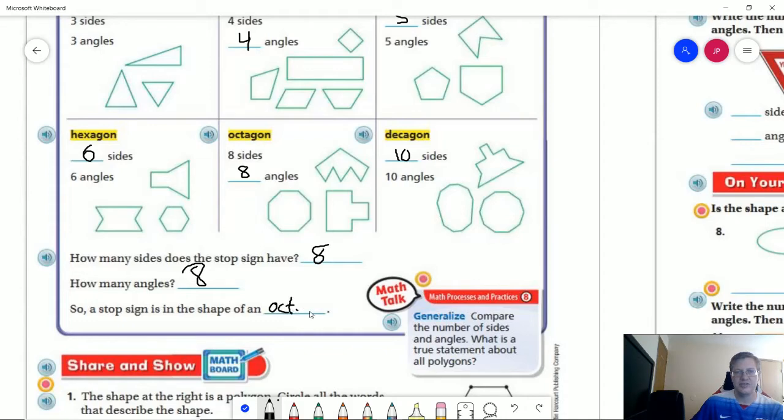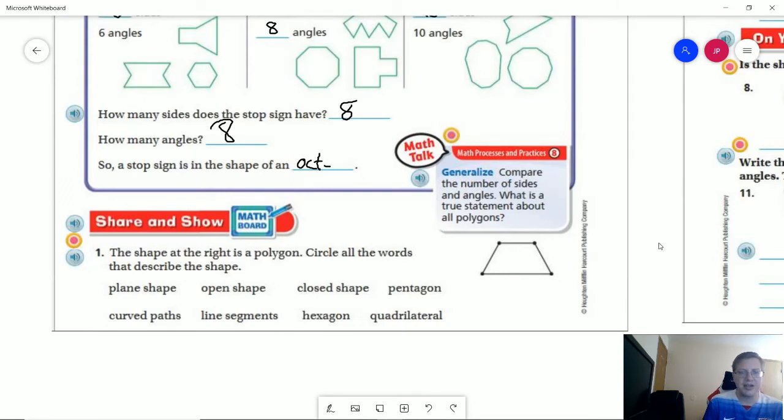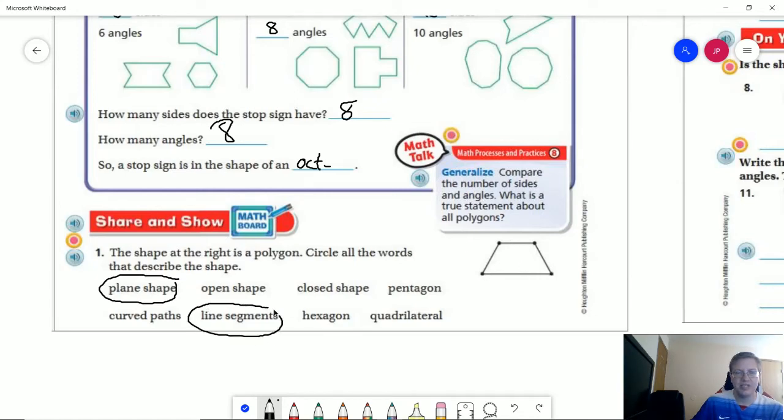And I'm just going to abbreviate for purposes of time. For share and show at the bottom, the shape at the right is a polygon. We'll talk about more specifically what the proper name of this would be next year. This would be a trapezoid. So it's going to be a plane shape. We have a shape that is made up of only line segments.